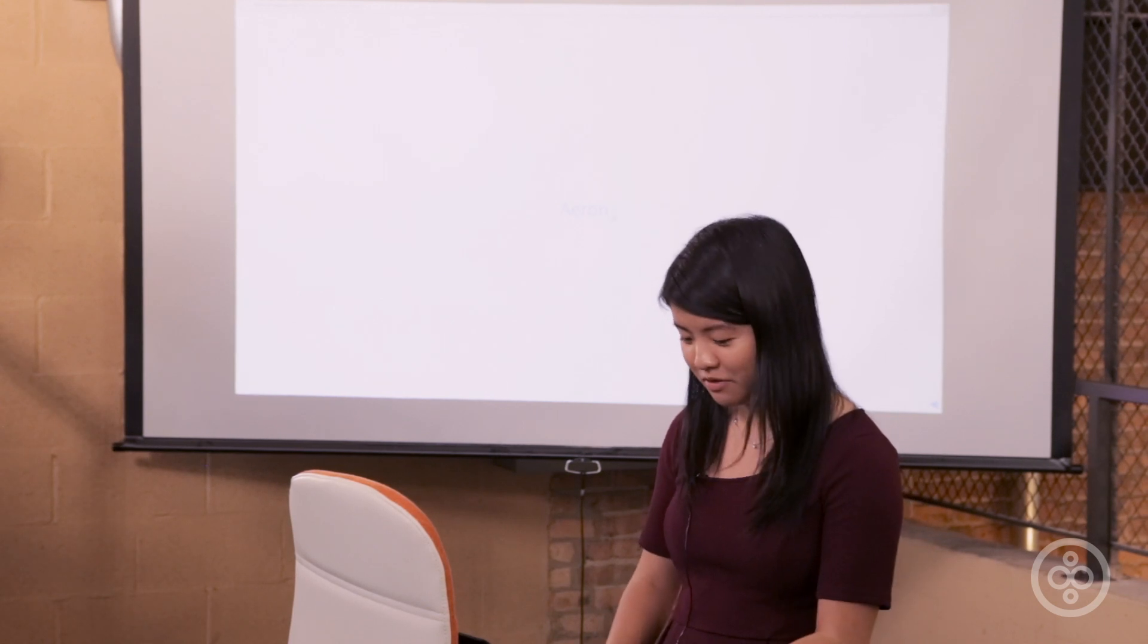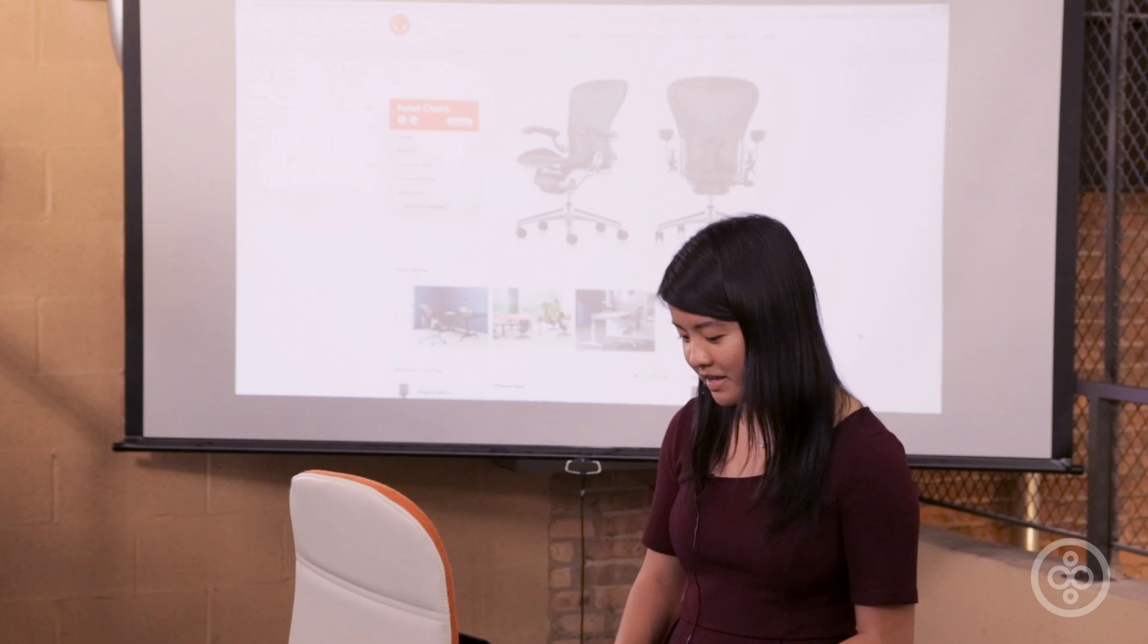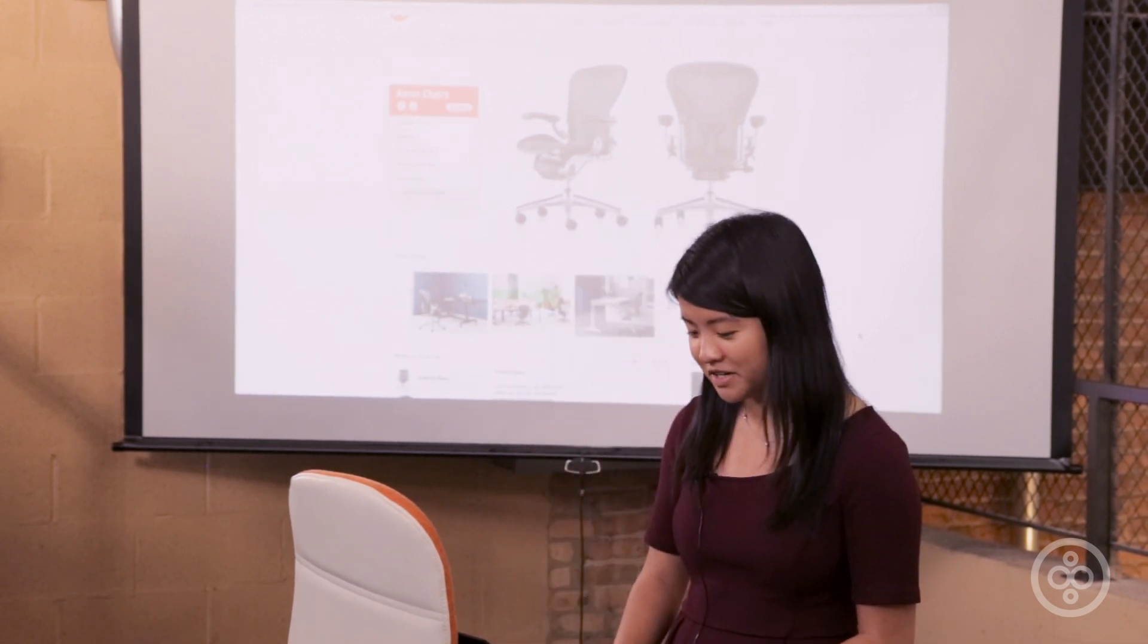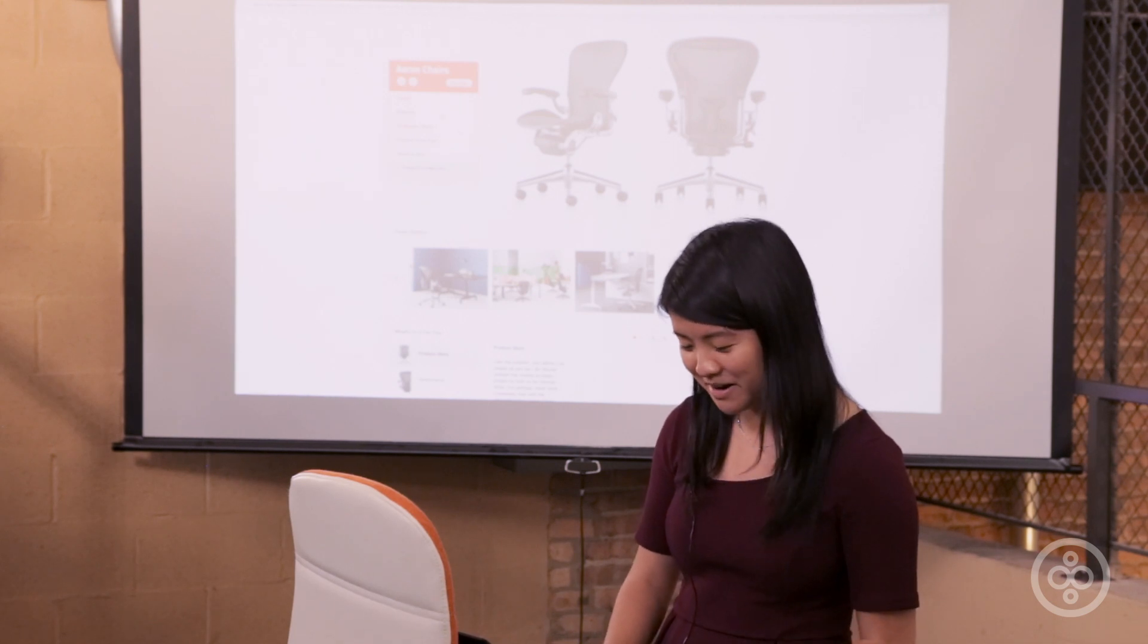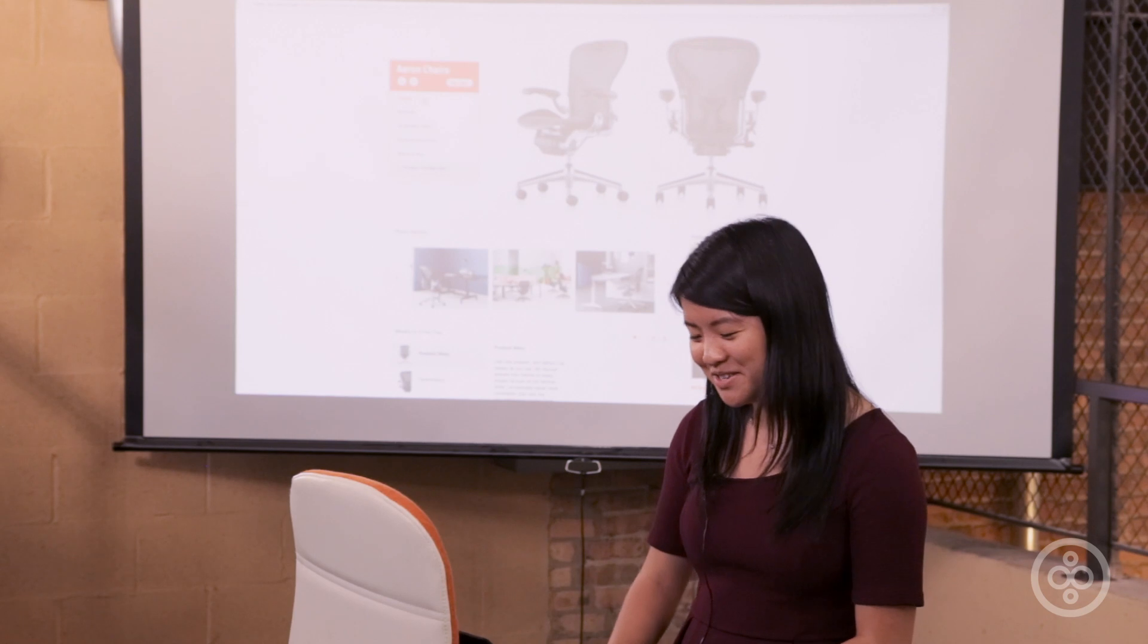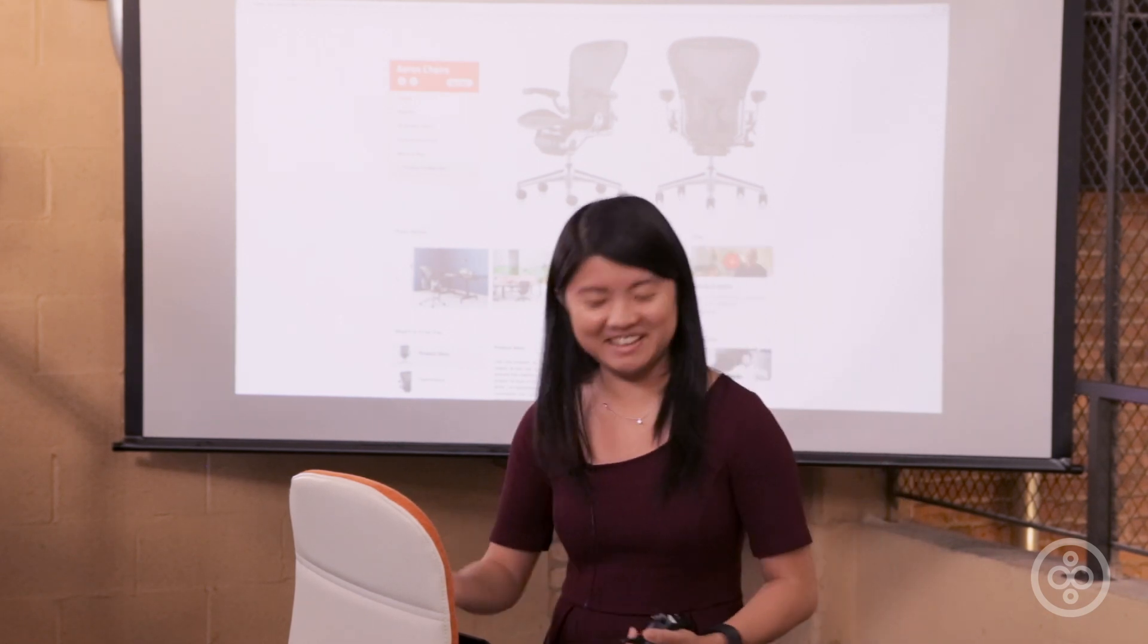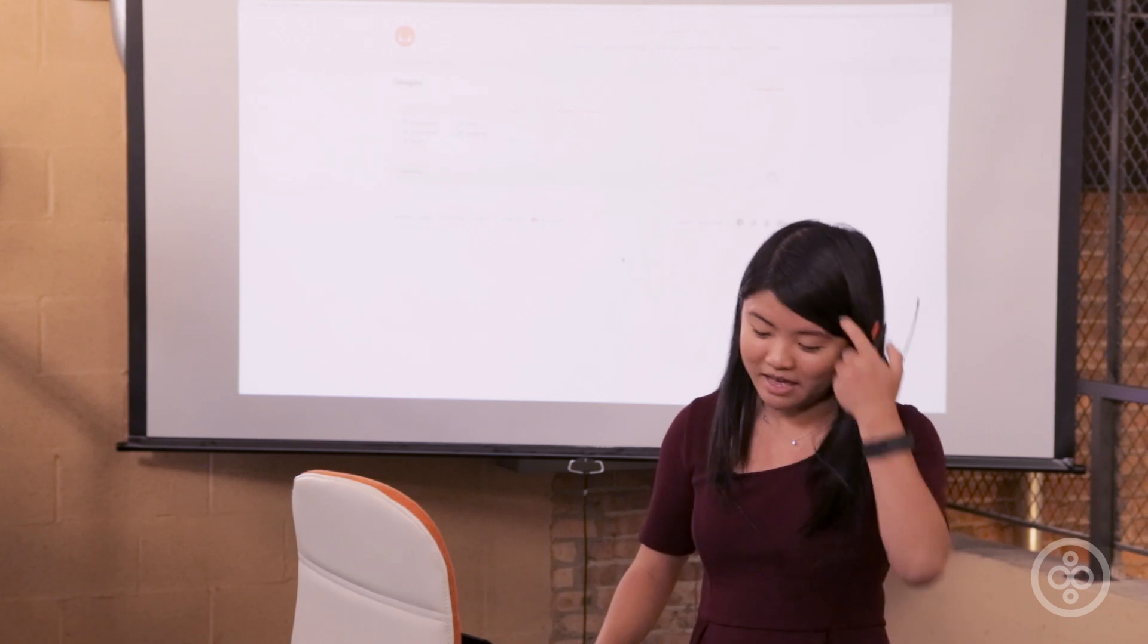Okay. There's another example that I wanted to show. For example, Aeron. This is a chair by Herman Miller. It's a very expensive chair, if you didn't know. It's about the same price as our products. So when you're trying to buy this chair, you want to look at it and see how it looks like. So basically, what people would do is go to images.